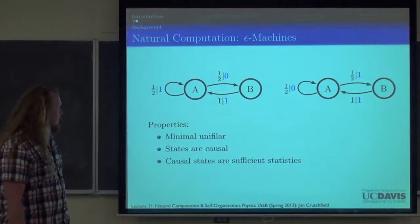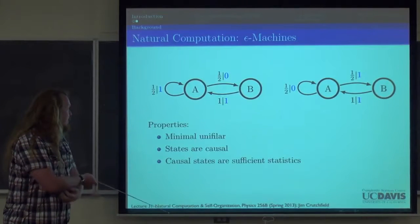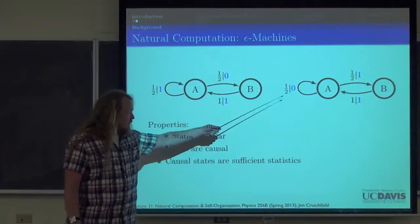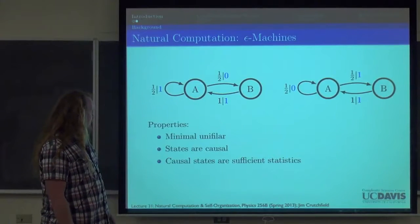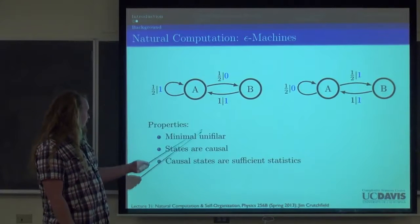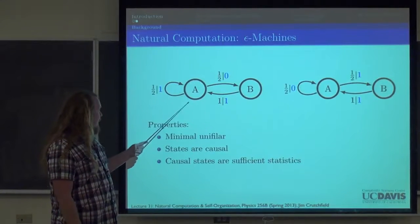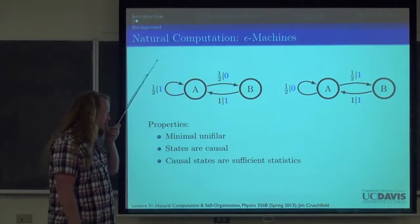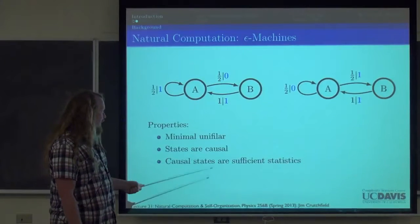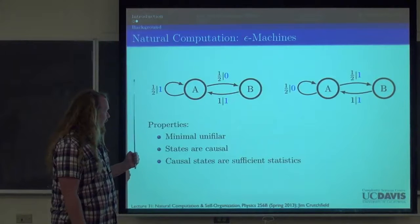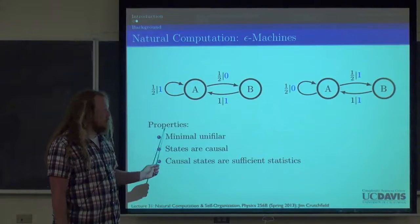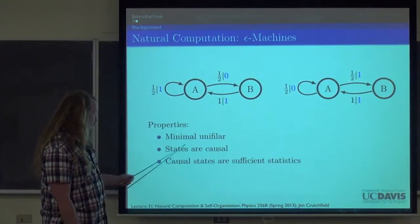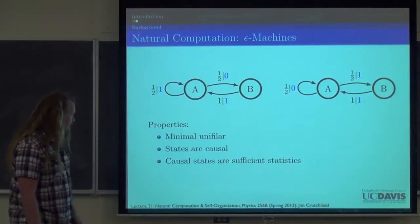Epsilon machines — you already know what those are, but they are Mealy-type unifilar Markov models that are minimal. Unifilar meaning that given a state and an output symbol, there's only one edge leaving on that output symbol. States are causal meaning that they summarize the past as best as possible — they are the minimal sufficient statistic.